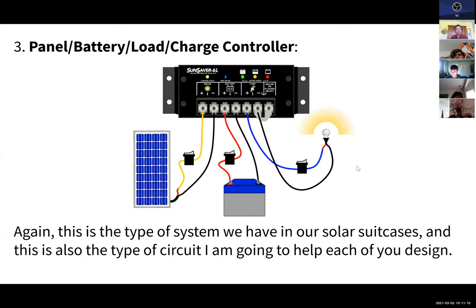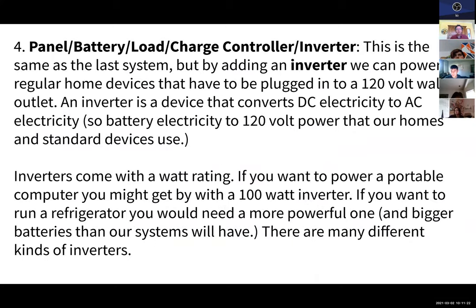That's what we have in our solar suitcases and the kind of system I'm going to help you design. A slightly more complicated system adds what's called an inverter. An inverter converts battery electricity—DC, direct current—to AC current, which can run a regular appliance. You could plug in your computer, a fan, or a charger for some device.